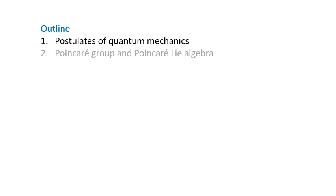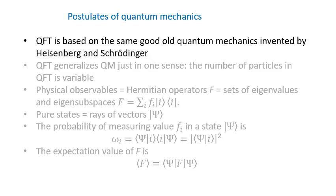That was the rough plan of the entire series. Let me now switch to today's topic. First, I will use one slide to remind you about the postulates of quantum mechanics, and then I will explain what the Poincaré group and its Lie algebra are, and why everything we want to know about relativity is contained in these two mathematical structures. QFT obeys the same postulates as ordinary quantum mechanics — it differs only in that the number of particles is not fixed and is allowed to vary.